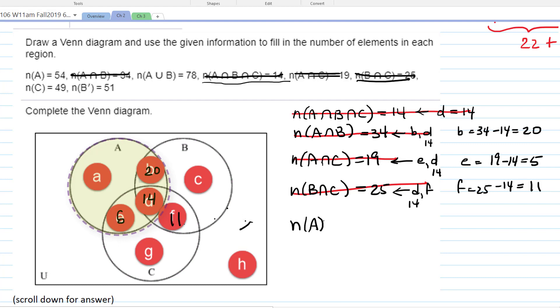So the number in A being 54 is really referring to little a, little b, little d, and little e. We already know that these are 20 and 14 and 5. That's supposed to be a 5 there. So that's what? 39. So if we subtract, we get that the number in little a is 54 minus 39, which is 15. Is that what you got? Good. So there's 15.